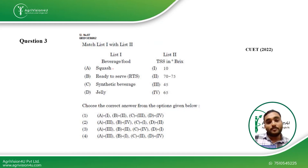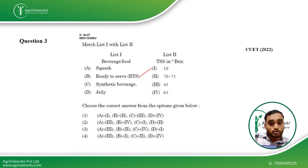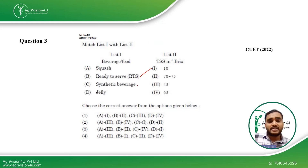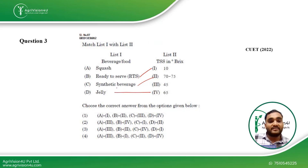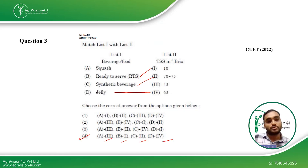Coming back to the question, we have to match the TSS values. RTS has a TSS of 10. Squash has a TSS of 45. Synthetic beverages — since they do not contain fruit juice and are synthetic in nature, incorporating artificial flavors — have a TSS of 70 to 75, because high amounts of sugar are used to compensate for the absence of juice. Jelly has a TSS of around 65. This makes the fourth option — sequence 3, 1, 2, 4 — the correct answer. This was asked in CUET 2022.